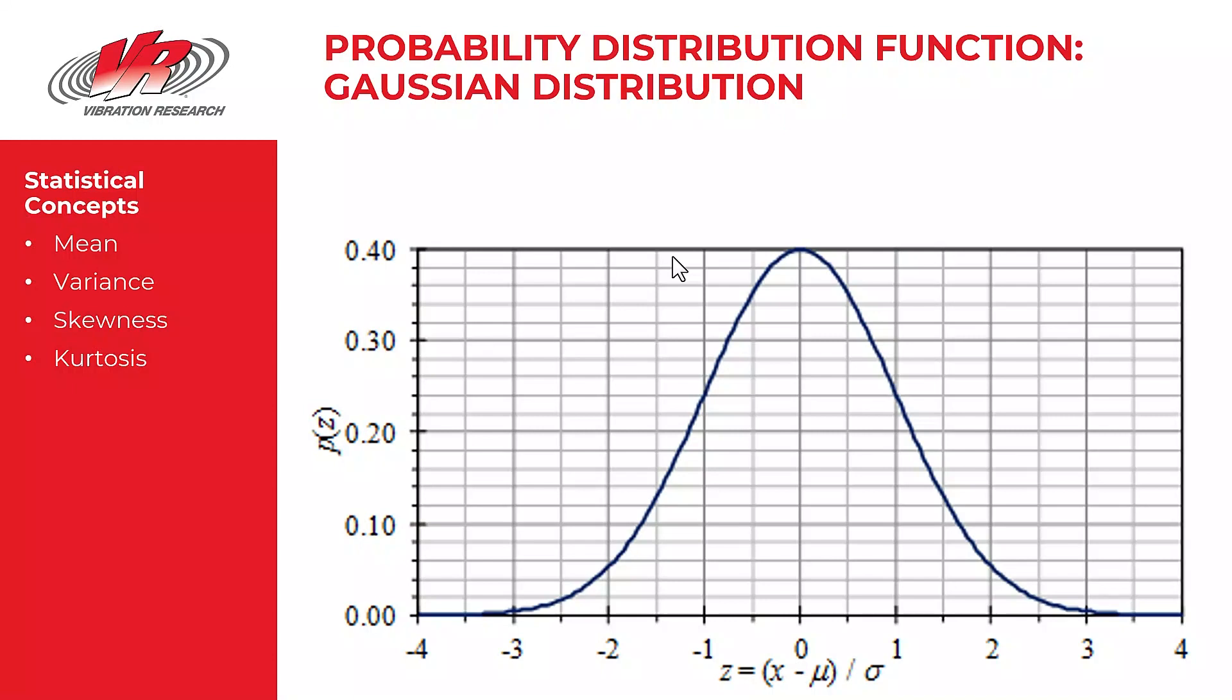The fourth statistical moment is called kurtosis. And that's the deviation of the peak acceleration values from the mean. We're going to develop that concept a little bit more in an upcoming video.